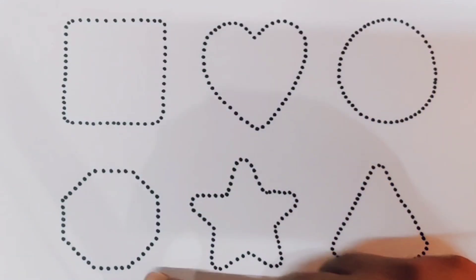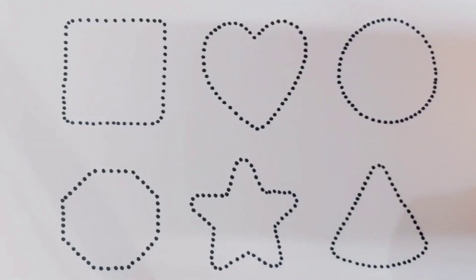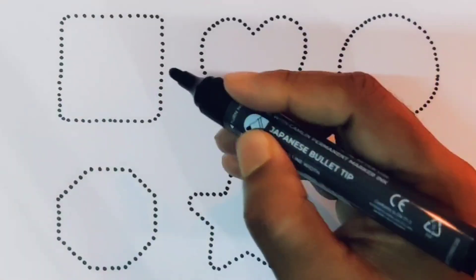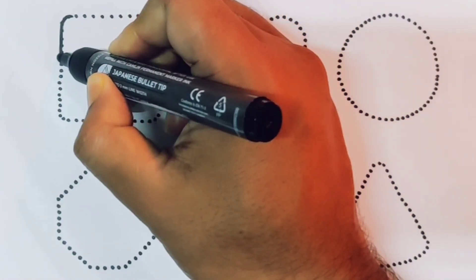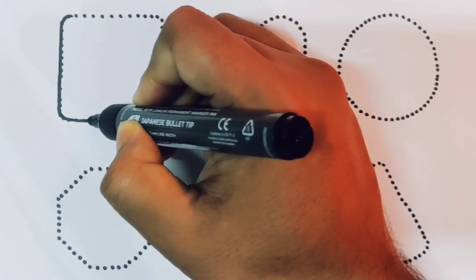Decagon, star, and triangle. First we're going to draw the shapes. Square.